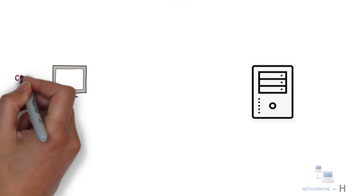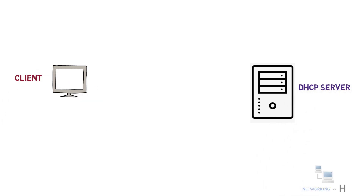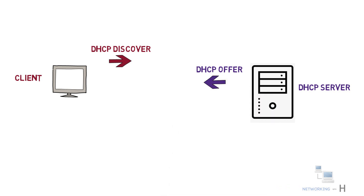Now let's look at what happens when a DHCP client requests an IP address from a DHCP server. There are four messages exchanged between them. First, when a DHCP client boots up, it broadcasts a DHCP Discover message to find the DHCP server on the local network. If the DHCP server exists on the local segment, it responds with a DHCP Offer message, offering the IP parameters to the client.